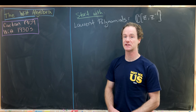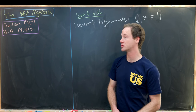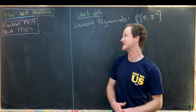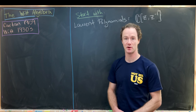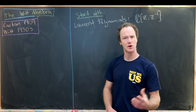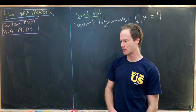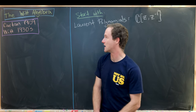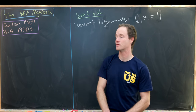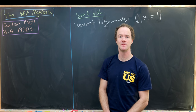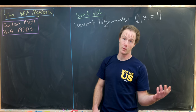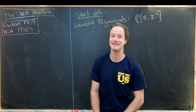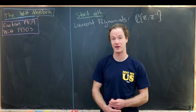In this video, we're going to explore and construct an algebraic structure known as the Witt Algebra. This algebra was first discovered by Cartan in 1909, and then Witt did some work with it in the 1930s.